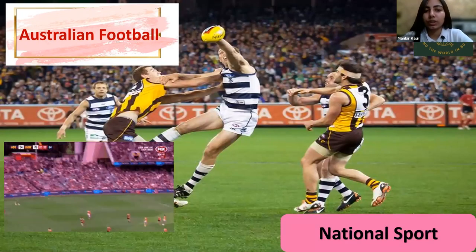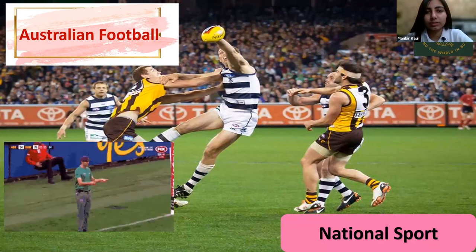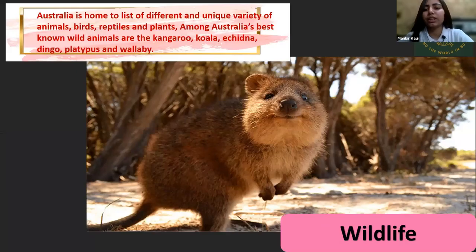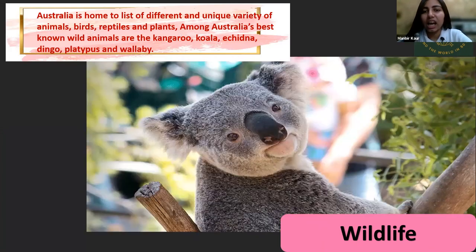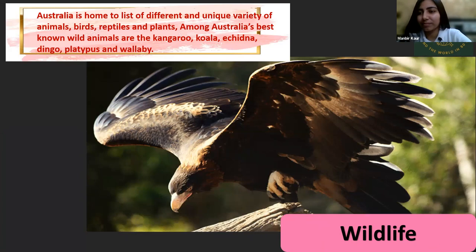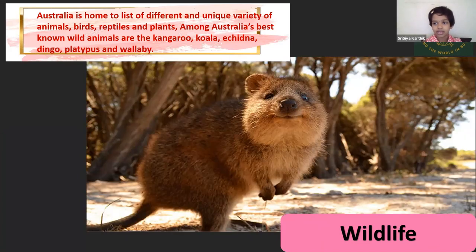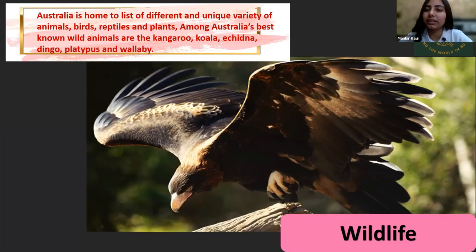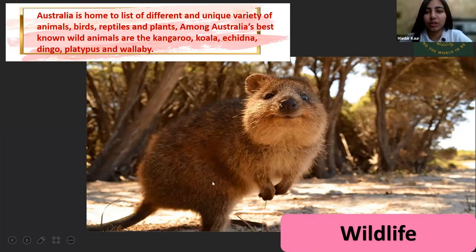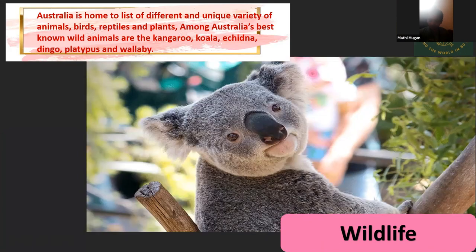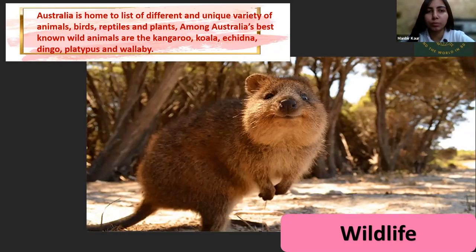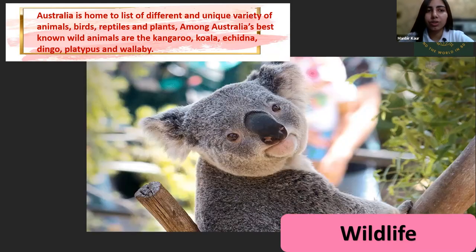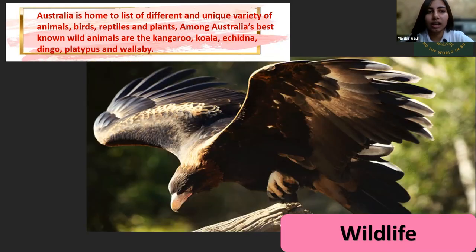The national sport of Australia is football. Now, do you know some of the wildlife or animals majorly found in Australia? Can you identify them through the pictures? Have you heard about kangaroos? Yes, kangaroos have a pocket for their babies! And have you heard about koala bears? Australia has a wide variety of wildlife — it is home to many unique animals, birds, reptiles, and plants. Among Australia's best known wild animals are the kangaroos and the koalas.